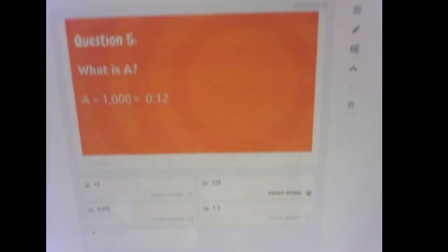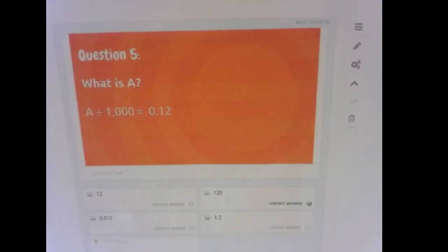And finally, what is A? So we have a number that was divided by 1,000 to give us 0.12.